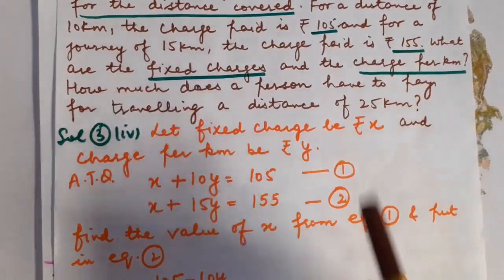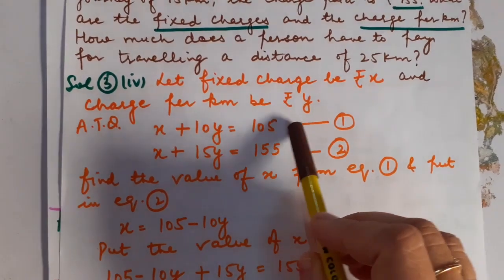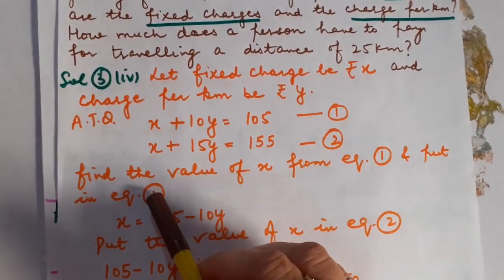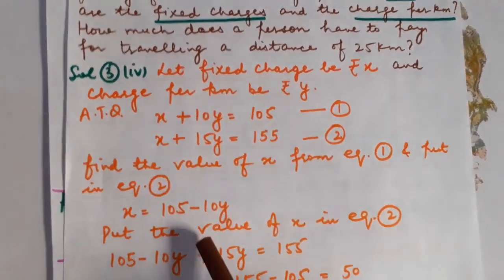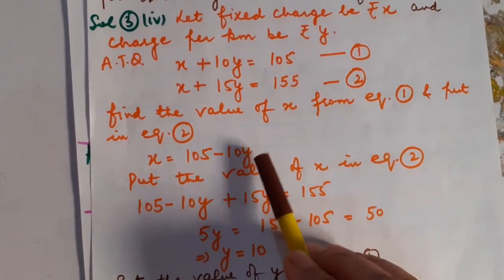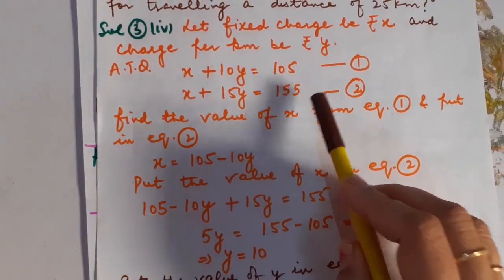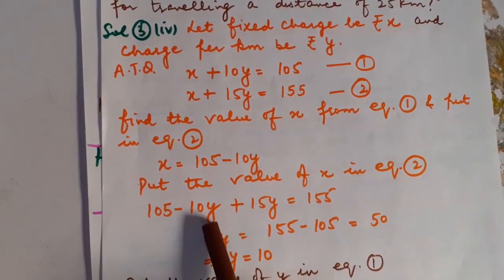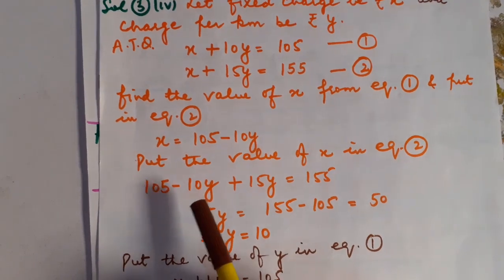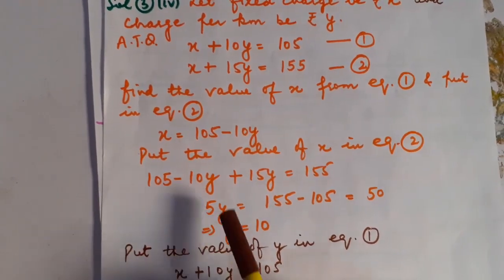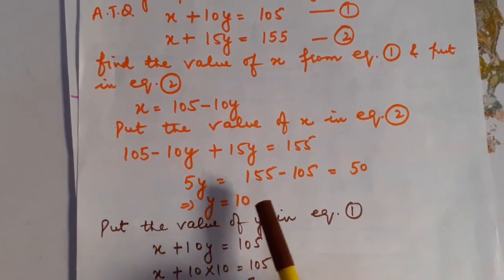Now I am going to adopt the substitution method. Find the value of X from equation number 1 and put it in equation number 2. So X = 105 minus 10Y. Putting this value into equation number 2: 105 minus 10Y plus 15Y = 155. Simplifying: 5Y = 155 minus 105 = 50. So the value of Y is 10.